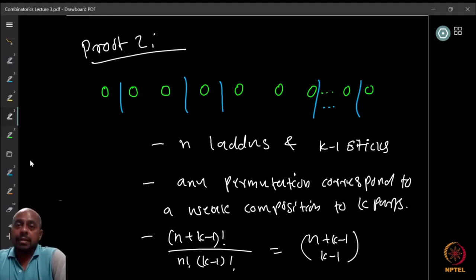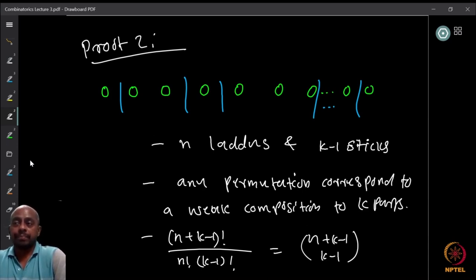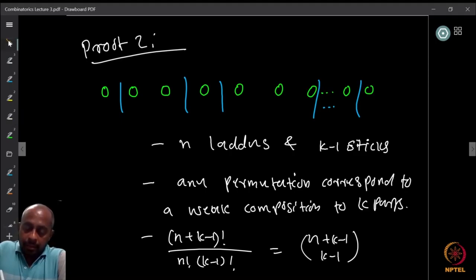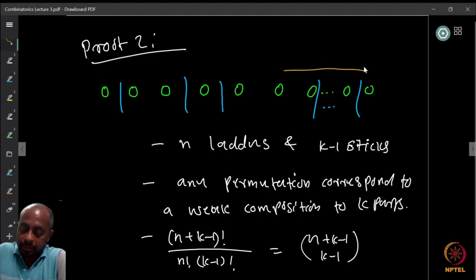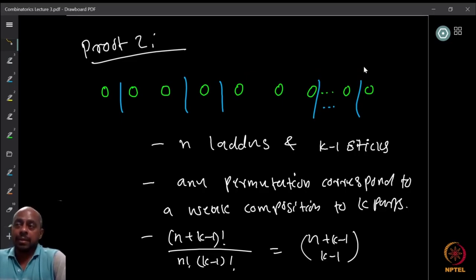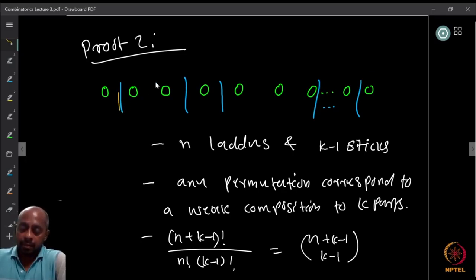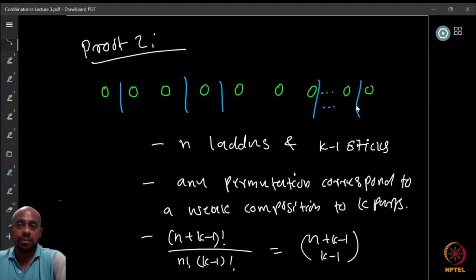Proof 2 uses a different observation. We observe that the number of ways to distribute the laddus to the kids can be found as follows. Keep the n laddus in a line — this one, this one, etc. — all n laddus are there. Now we separate the laddus by placing markers or sticks in between them.